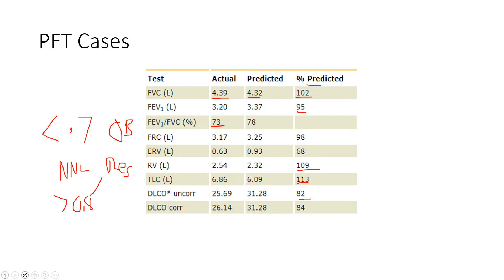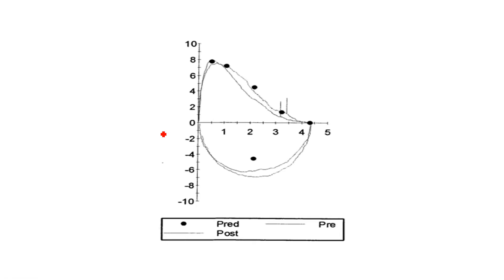Looking at the flow volume loop in this patient, the black dots represent the predicted values. This patient was also assessed following a bronchodilator, so there are pre and post values. Post-bronchodilator testing is often done to see if there is reversible bronchoconstriction — like asthma, a reversible obstructive defect — versus a fixed obstructive defect seen in COPD. His values fall pretty close within the predicted range, and even before the bronchodilator they don't look much different than expected. There's a little improvement post-bronchodilator, but it looks pretty similar overall. This is a normal flow volume loop for an older patient — nothing too concerning.